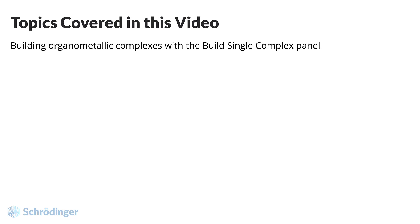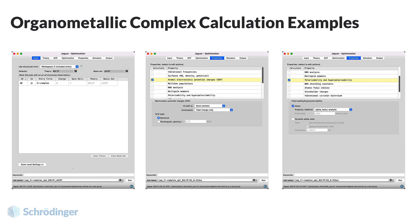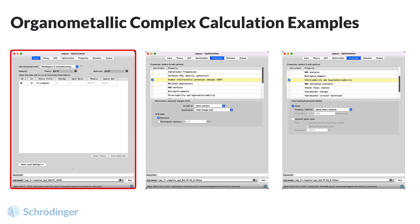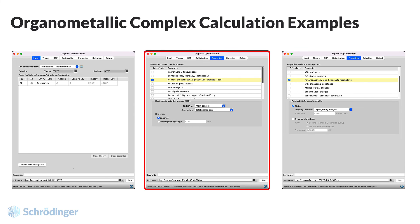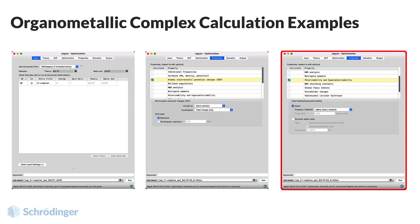In this video, we learned to build an organometallic complex with the Build Single Complex panel. From here, you could use many different panels in Schrödinger Maestro to study the single complex. Various properties could be computed for these organometallic complexes, such as performing a geometry optimization, calculating atomic charges, or determining the polarizability.